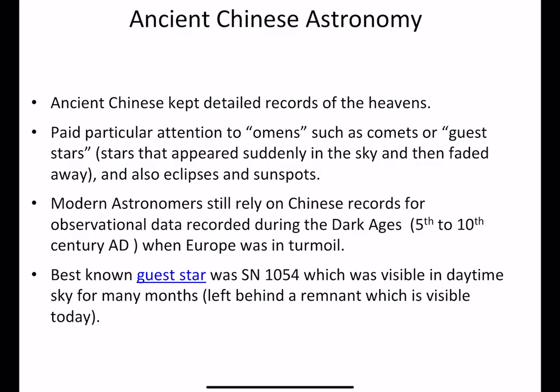Ancient Chinese also studied astronomy very carefully. They kept detailed records of everything they saw in the sky, paying particular attention to omens — things that would appear different in the sky. Things that would show up as new or different would usually be comets, which show up in the sky with a peculiar structure and move from night to night before disappearing. The Chinese paid particular attention to these omens.